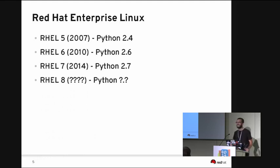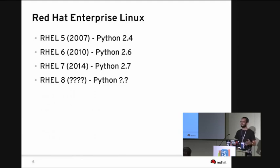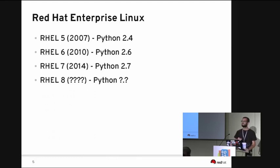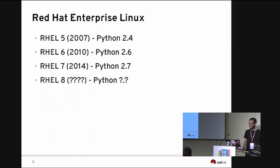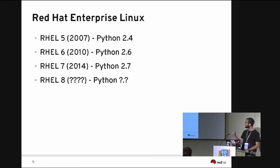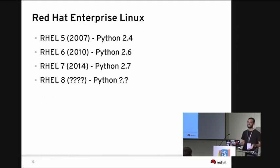I personally am sincerely, honestly hoping that RHEL 8 will be Python 3. But there are lots of stakeholders, big companies, big players — we'll see about that. RHEL is a really slowly moving target: it's very stable. Once we place Python 2.6 in RHEL 6, we will never update that. We'll keep Python 2.6 forever, basically, as long as RHEL 6 lives.